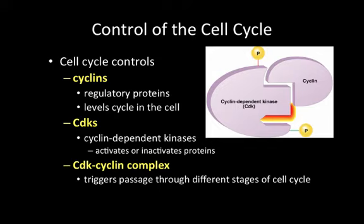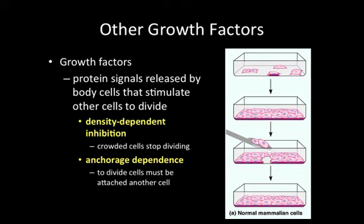The CDK-cyclin complex allows the cell cycle to continue. Two other factors also affect mitosis: density-dependent inhibition, where crowded or tightly compacted cells stop dividing; and anchorage dependence, where certain cells must be attached to another cell in order to divide. If cells inside the body aren't properly attached and start dividing anyway, you could have masses of unnecessary cells forming in the wrong locations. Both are essential for proper cell cycle regulation.